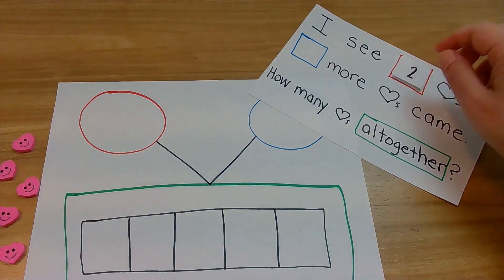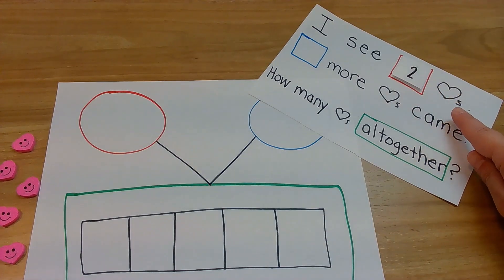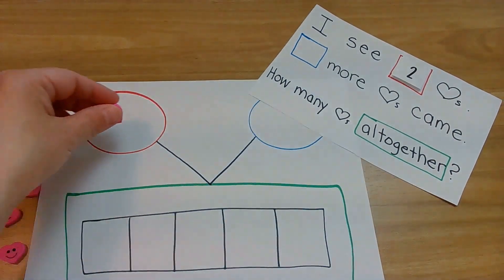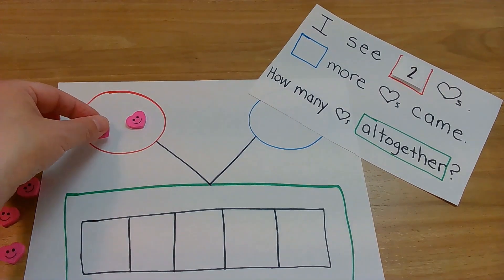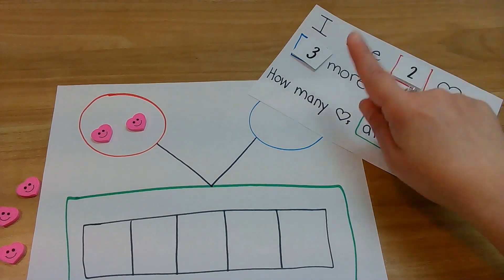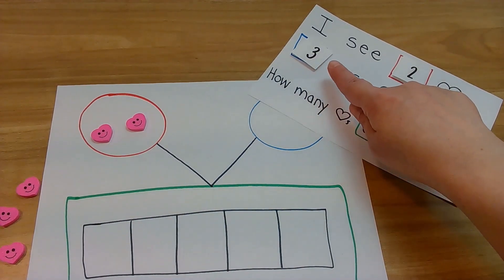Here we go, here's our first one. I see two hearts, and it's in our red, so let's put that in our red: one, two. Yes, okay, ready? Here we go. Three more hearts came. Three, okay.